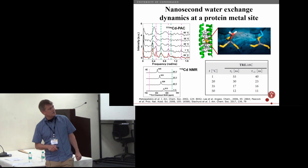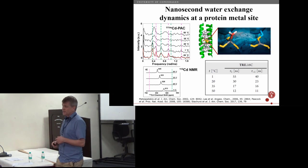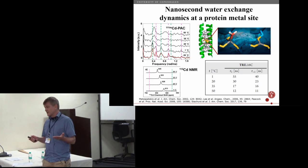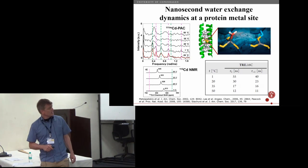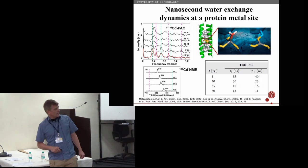One is a trigonal planar structure which was the intention, and the other one is a water molecule sitting there, so you make a tetrahedral structure. These have of course different electric field gradients at the cadmium site and so this is what you see here.